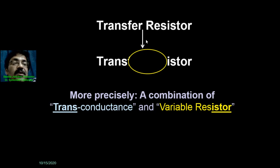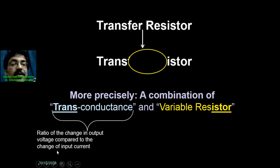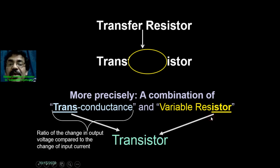What is transconductance? It is basically the ratio of change in output voltage compared to the change in input current. From transconductance, we take 'trans,' and combining with the resistor part, we get the transistor.